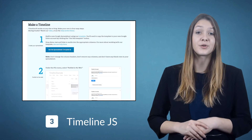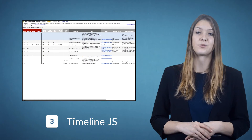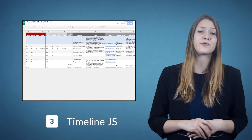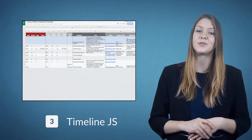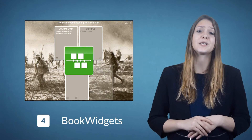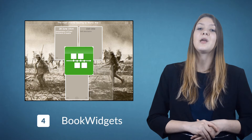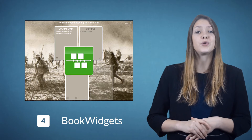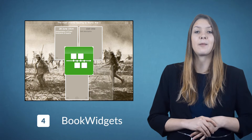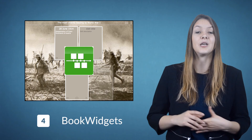Most online timeline builders are lacking some features that would make them a good fit for the classroom. The one I miss most is reporting and the ability for students to change or rearrange a timeline. That's why I'm a big fan of the BookWidgets timeline widget. When creating a timeline you can choose between two modes: use the fixed timeline mode to create a static timeline just for viewing, but I think you should really try out the editable mode.